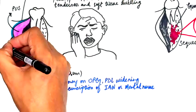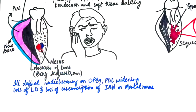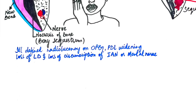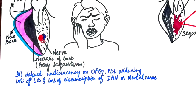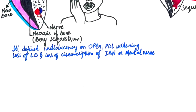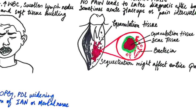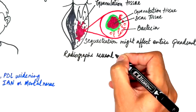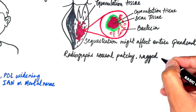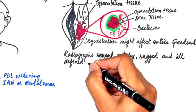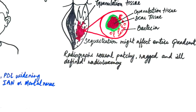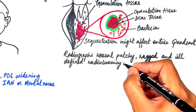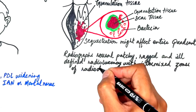Periosteal new bone formation may also be seen in response to the subperiosteal spread of the infection. Radiographs in chronic suppurative osteomyelitis reveal patchy, ragged, and ill-defined radiolucent or dark zones that may contain central opaque sequestra.